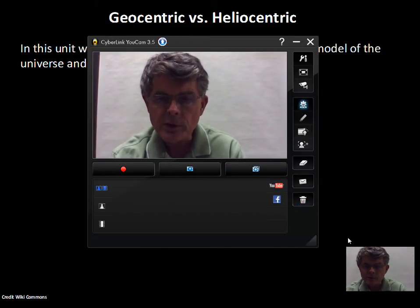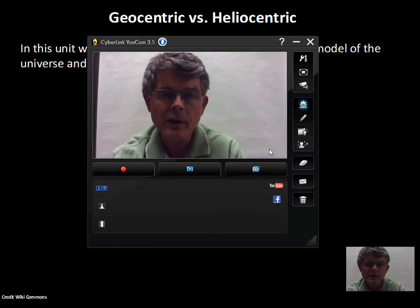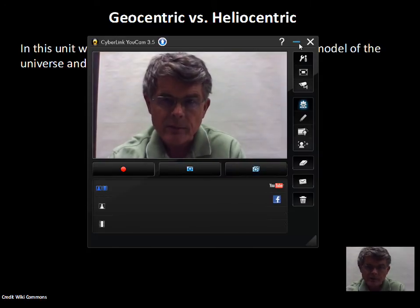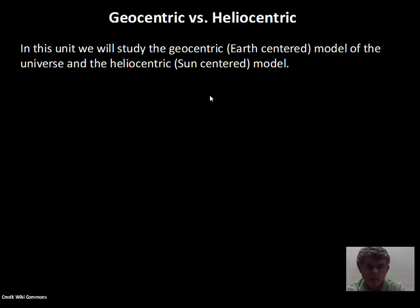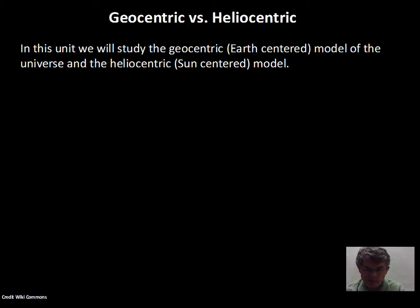We continue our study of the solar system with consideration of who's at the center. Is the Earth at the center of the solar system or is the Sun? The older ideas about the solar system were Earth-centered, geocentric — G-E-O for Earth — and after observations were correctly interpreted, we find a heliocentric, Sun-centered model. We'll explore some of the history on how this developed.